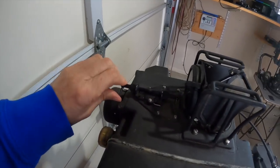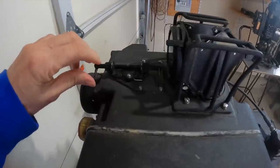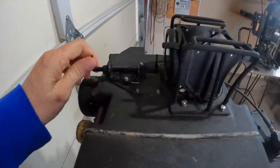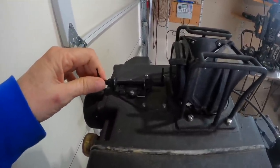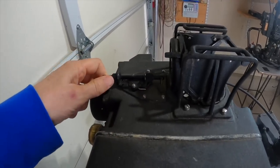We also have a flip up sight. This is only used for point blank firing. If the interceptor is within 200 yards or closer, we'll flip this up and then use this as our sighting system.